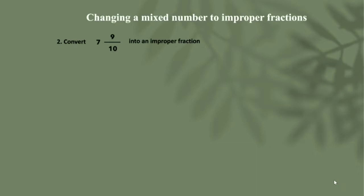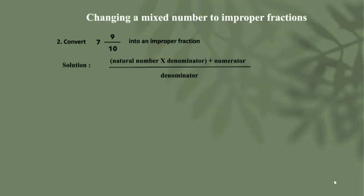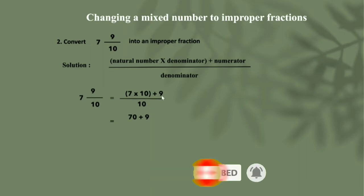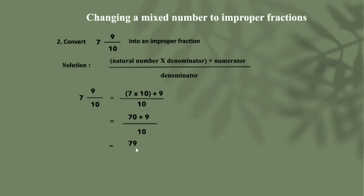Next, go for the second example. Convert 7 and 9 by 10 into an improper fraction. Using the formula: natural number × denominator + numerator, by denominator. So 7 and 9 by 10 equals (7 × 10) + 9 by 10, which equals 70 plus 9 by 10, giving us 79 by 10. So this is an improper fraction.